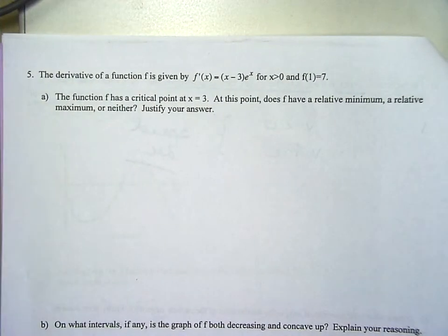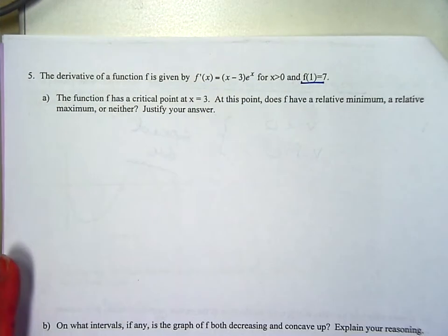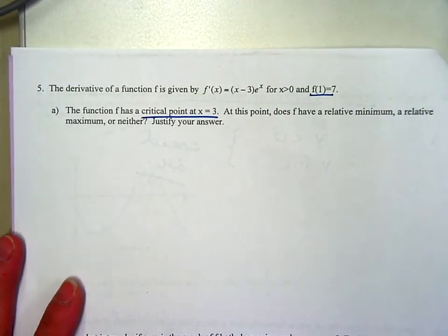This question gives you a derivative function and they give you a point on the initial graph. It tells you that it has a critical point at x equals 3, which means the derivative is equal to 0 or undefined.